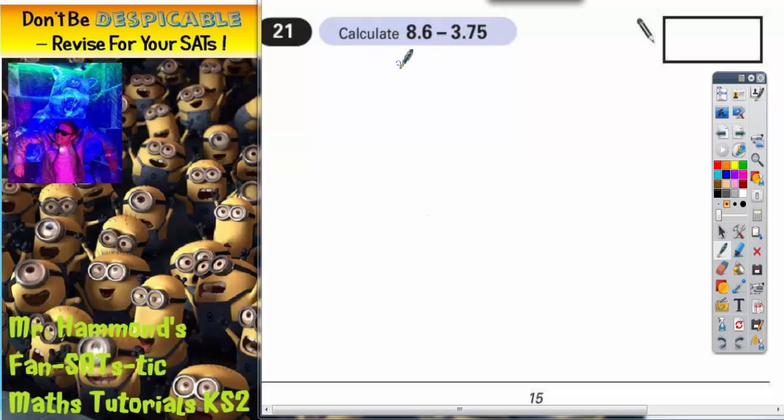Question 21. Calculate 8.6 subtract 3.75. This will be nice and easy if we make sure we use a column method.